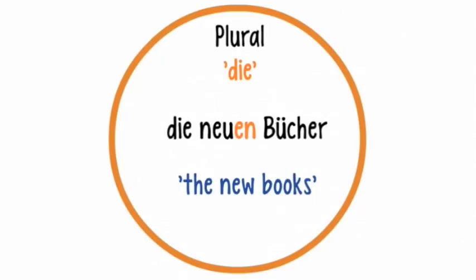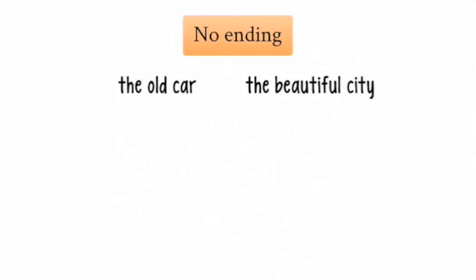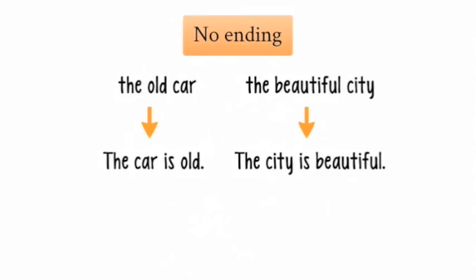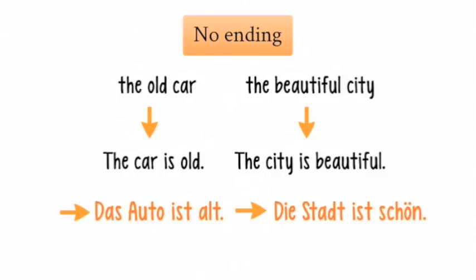Let's have a look at the plural form. If we change the construction of the sentence 'The old car' to 'The car is old,' or 'The beautiful city' to 'The city is beautiful,' then the adjectives won't change. In German, 'The car is old' is Das Auto ist alt, and 'The city is beautiful' is Die Stadt ist schön. So always remember that in German, if the adjective follows the verb, there is no change in the ending.